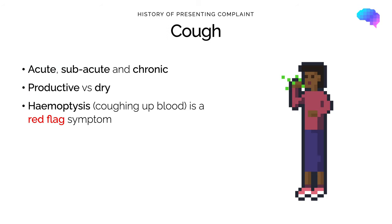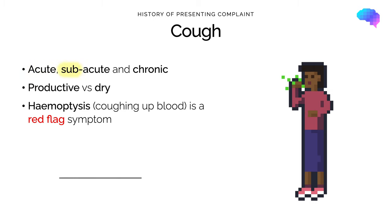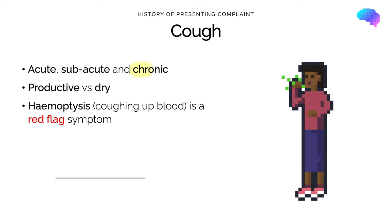Our next key respiratory symptom is cough. Cough can be categorised into acute, subacute, and chronic, relating back to onset and time course. An acute cough is present for less than three weeks, a subacute cough for between three and eight weeks, and a chronic cough is persistent for more than eight weeks.